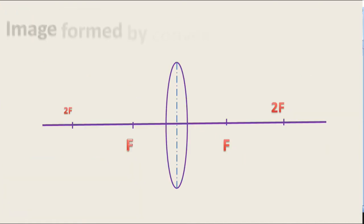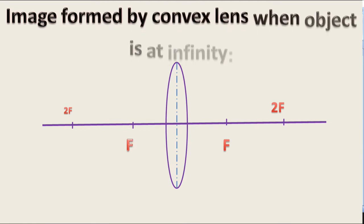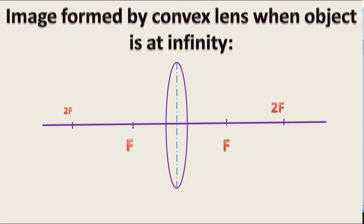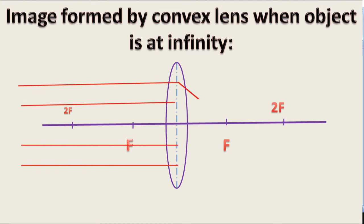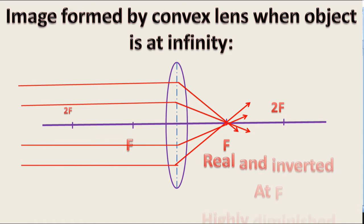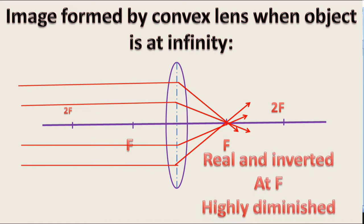The image formed by a convex lens when the object is at infinity: only a parallel beam of light comes from the object and passes through the lens. In this condition the beam of light converges at F. The image obtained is real and inverted, formed at F, and it is highly diminished in size.